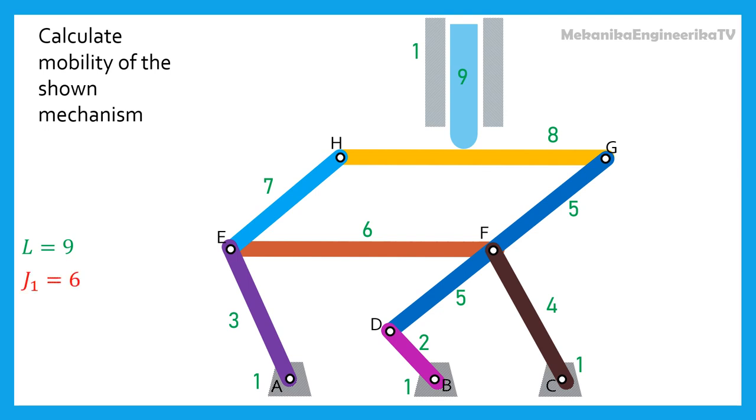There are 6 pin or rotating joints of simple order: pin A, pin B, pin C, pin D, pin H, and pin G.